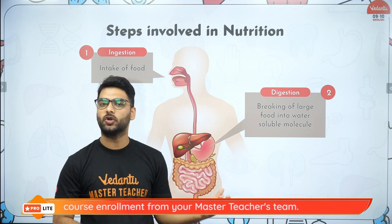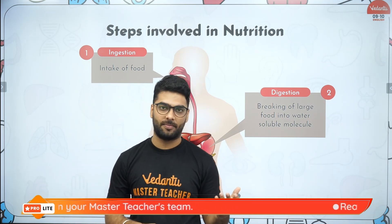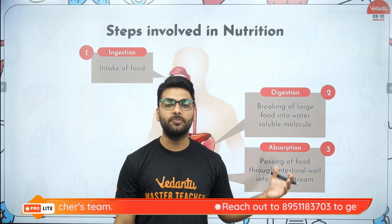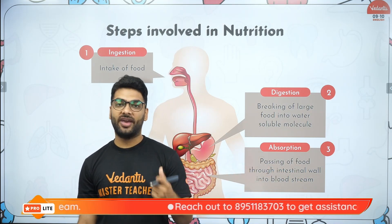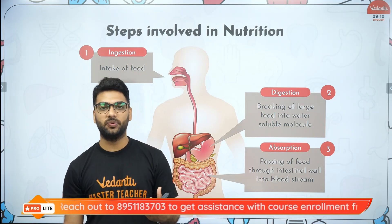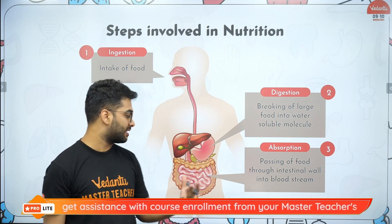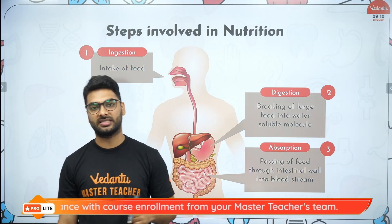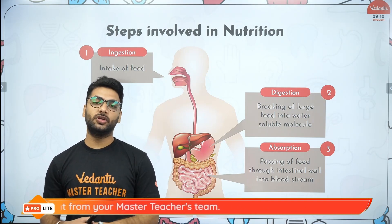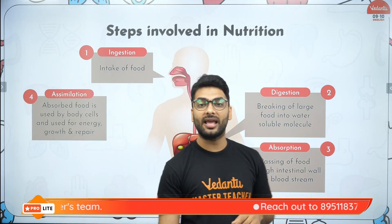Digestion is the breakdown of complex food into simple food — for example, breakdown of starch to maltose by salivary amylase, and breakdown of proteins to peptones by pepsin in the stomach. After digestion, we come to absorption, where the broken-down food releases nutrients. These nutrients are absorbed by the finger-like projections in the small intestine called villi, which absorb the nutrients and give them to the blood.